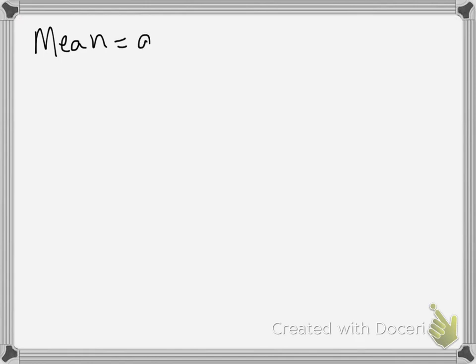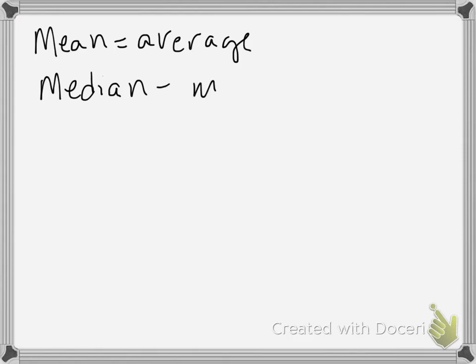Our previous video talked about mean — the average of a data set, found by adding all the numbers and dividing by the number of items. This gives us a number with central tendency, tending toward the center. Median is another measure of central tendency: it is the middle number. So if you line up a group of friends, the person standing in the middle is the median.